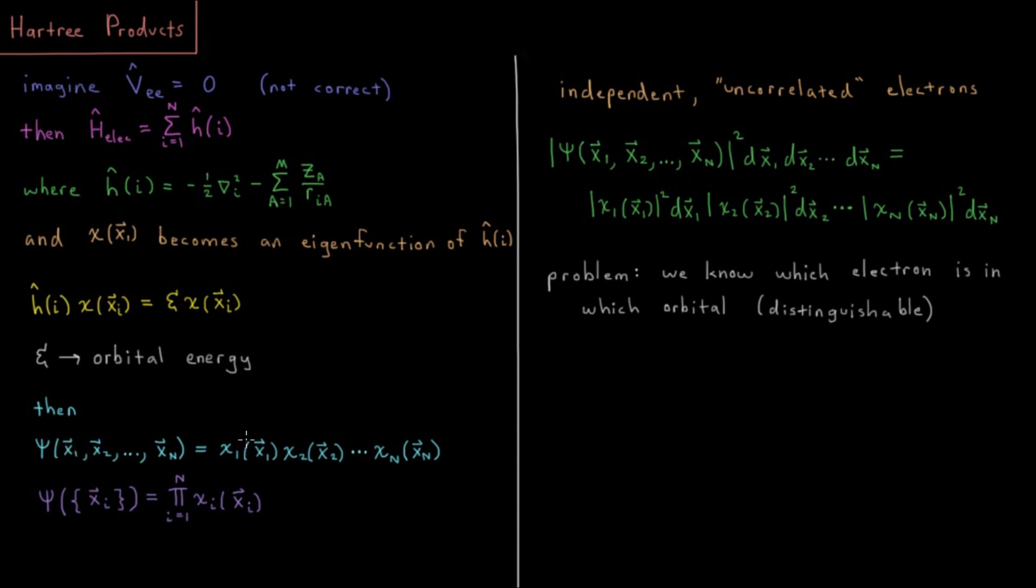If this were the case, then our wave function psi of electron 1 to all the way up to electron n in its x, y, z, and spin coordinates would be chi_1 times x_1, chi_2 times x_2, all the way up to chi_n times x_n, spatial orbital n of electron coordinates n.